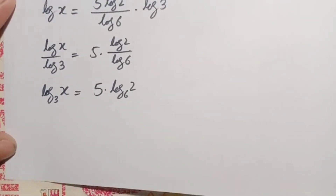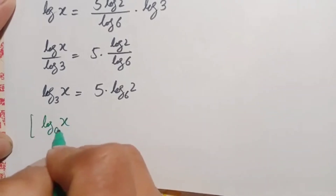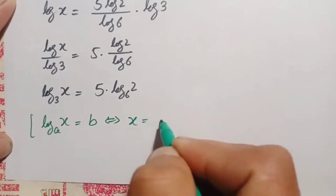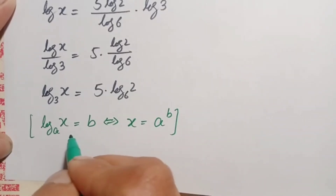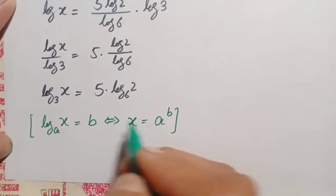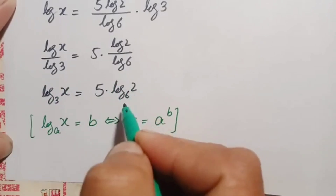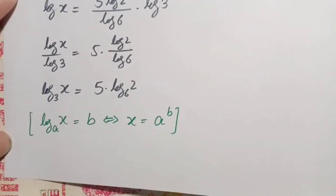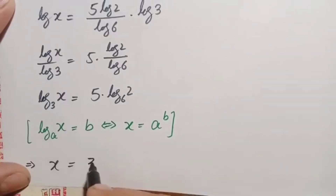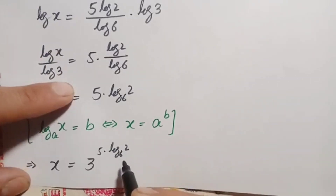We use the logarithm-to-exponential identity: log of x with base a equals b is the same as x equals a raised to power b. Applying this to both sides of the equation — where x is x, a is 3, and b is 5 times log of 2 with base 6 — we get x is equal to 3 raised to the power of 5 times log base 6 of 2.